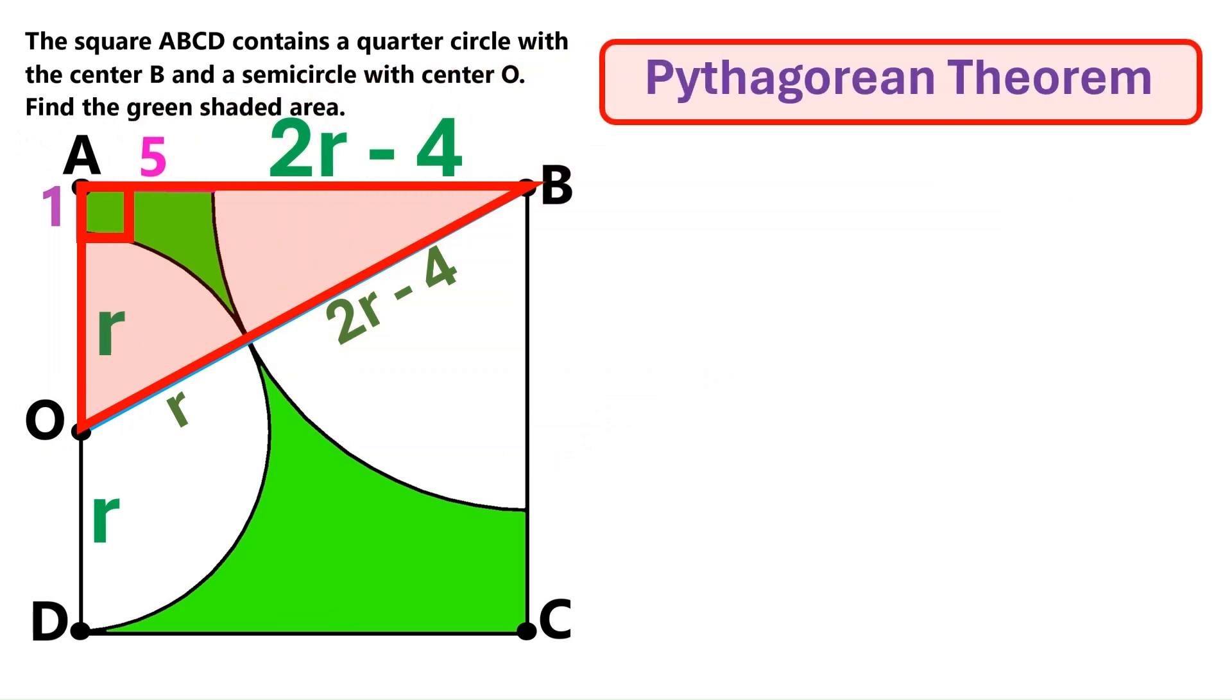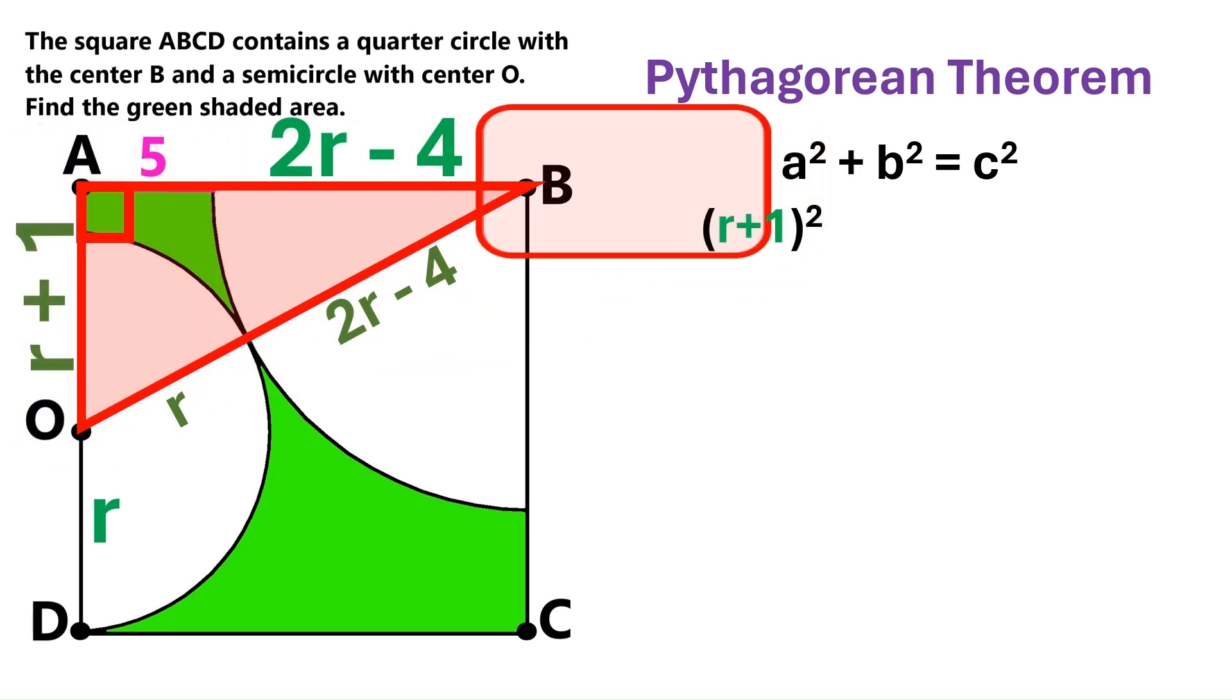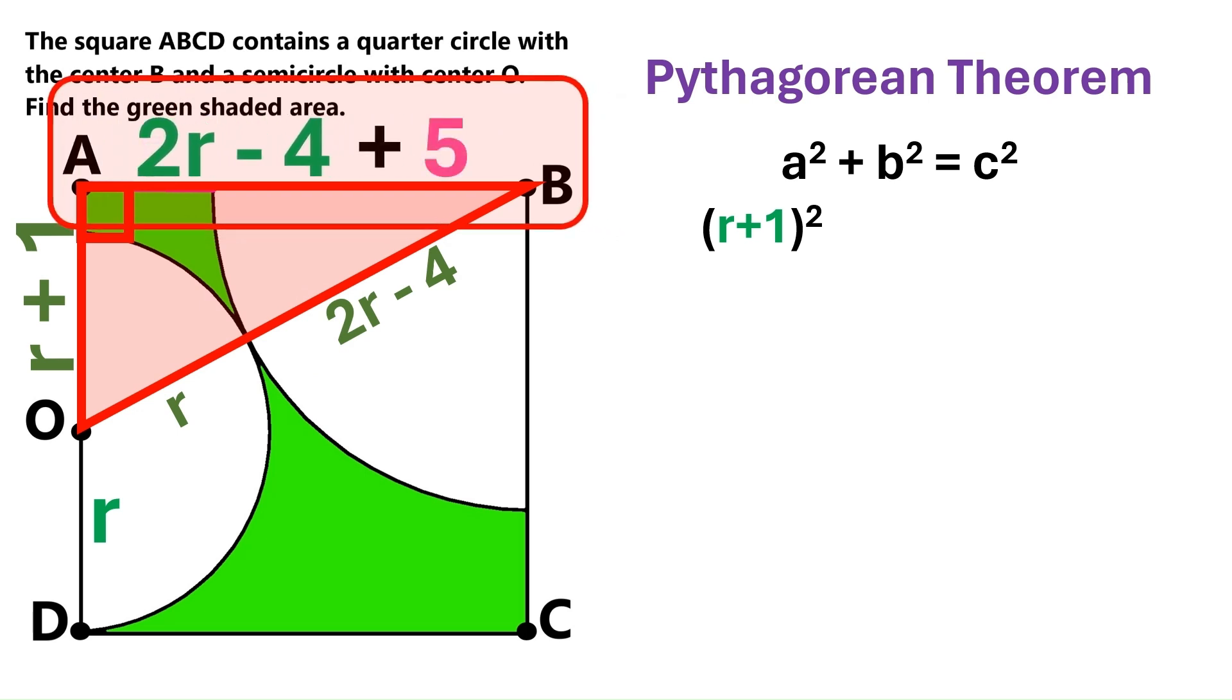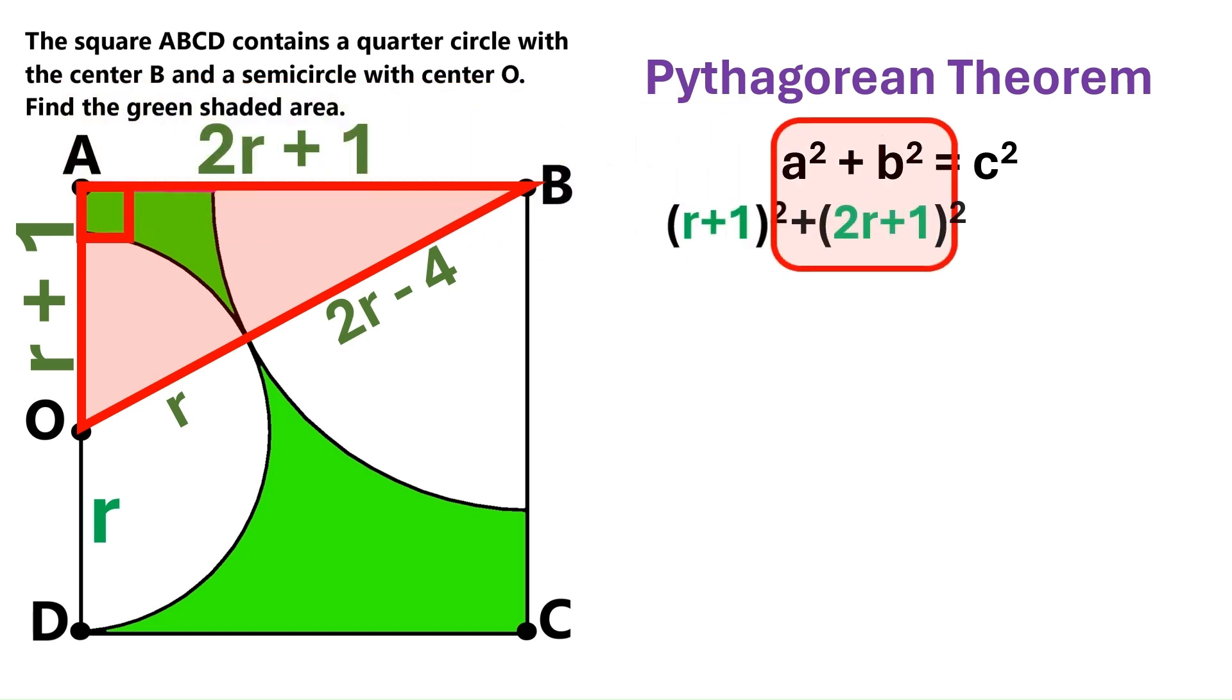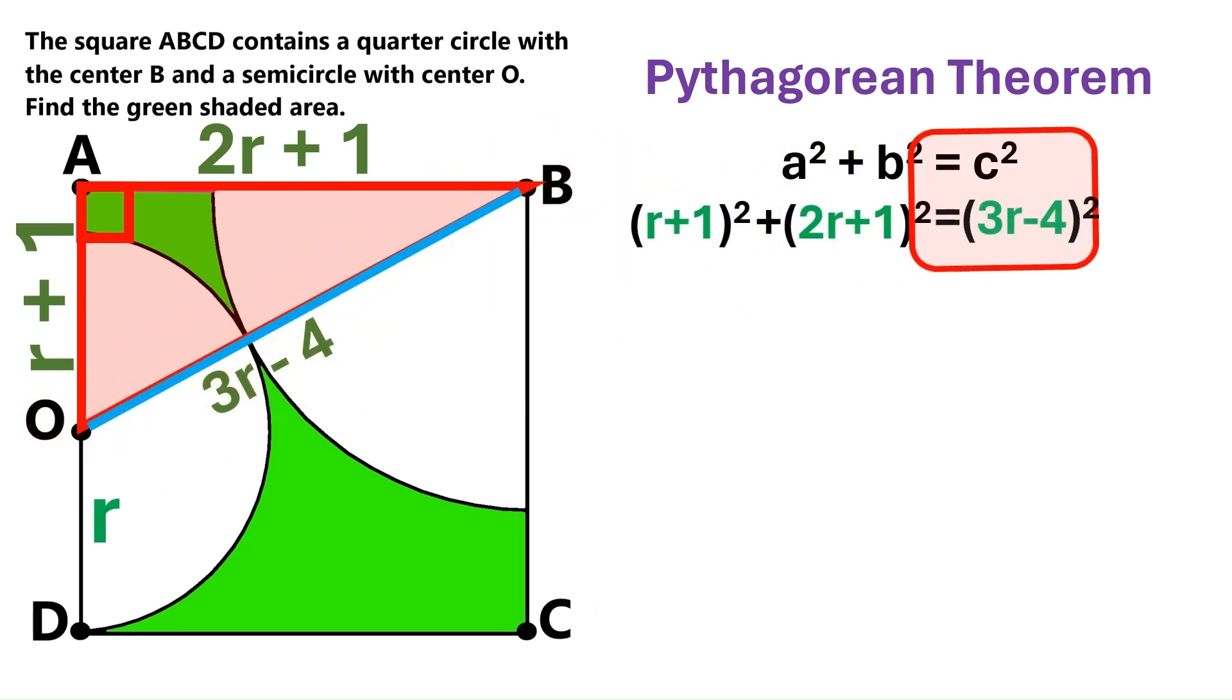Now, according to the Pythagorean theorem, the sum of the squares of the legs of a right triangle that are its shorter sides equals the square of its hypotenuse, that is its long side. This is one of the legs of our right triangle, and its length is r plus 1. So let's take the square of that. Here's the second leg. And its total length is 2r plus 1. Let's take the square of that too. And finally we have the hypotenuse here. And it's got a total length of 3r minus 4. Let's take the square of that too.